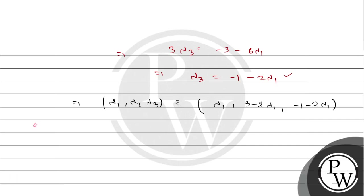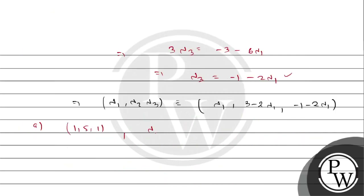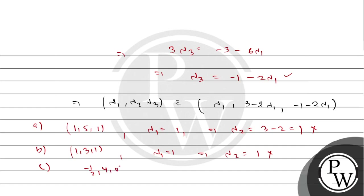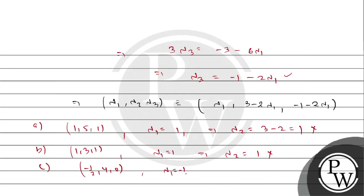The options are not yet checked. Option A gives lambda-1 = 1, lambda-2 = 5, lambda-3 = 1. If lambda-1 = 1, then lambda-2 = 3 minus 2 = 1, which is not equal to 5 — so option A is not possible and is incorrect. Option B is (1, 3, 1): lambda-2 = 3 minus 2 = 1, which equals 1, so this is consistent. Option C is (-1/2, 0, ...): lambda-1 = -1/2, so lambda-2 = 3 minus 2*(-1/2) = 4, which matches option C.